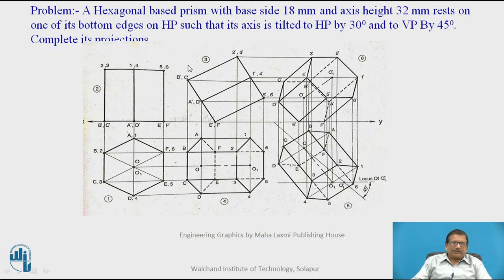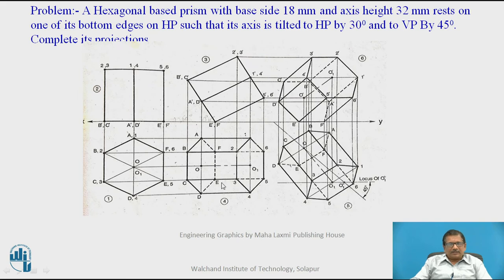After redrawing, we will project BC downwards. Point B is projected here, followed by C, giving BC. Then AD: A is projected downwards and horizontally, giving point A; similarly D is projected vertically, giving point D. Then EF: points E and F are each projected horizontally and vertically, giving points A, B, C, D, E, F. This is the view of the base when the axis of the prism is making 30 degrees with HP.